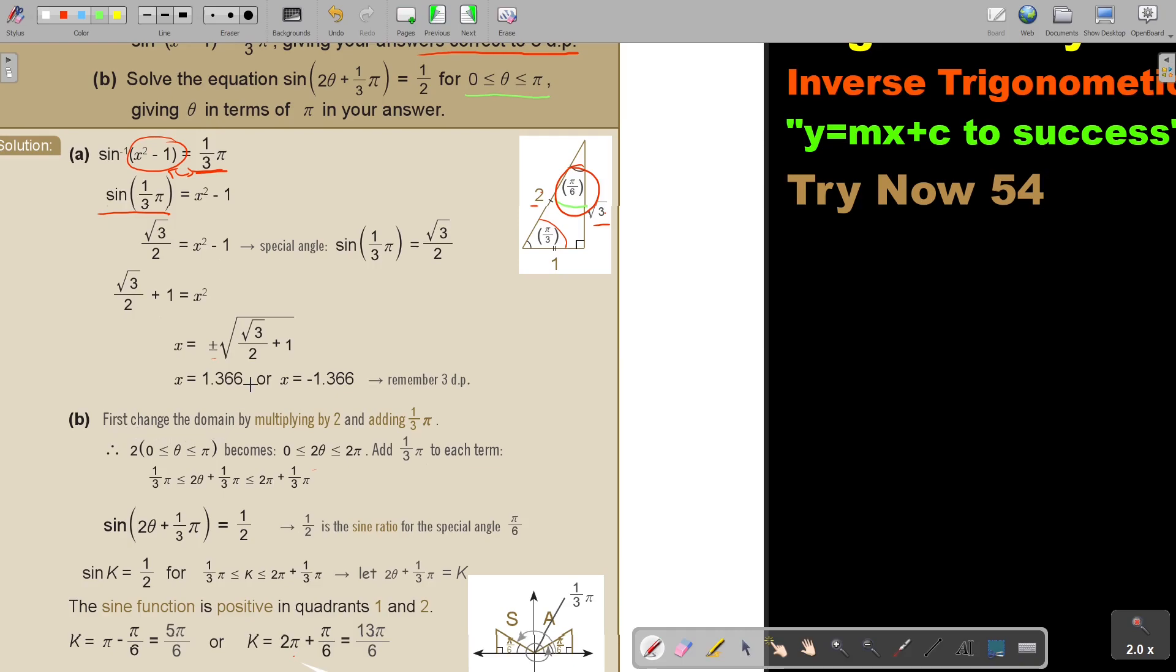First, change the domain. You must get that this is the same as this. I must still multiply with 2, so I multiply with 2 and it becomes 0 is less than or equal to 2 theta less than or equal to 2 pi, and then I must still add a third pi. This is very important. This is now my interval that I'm going to work with.